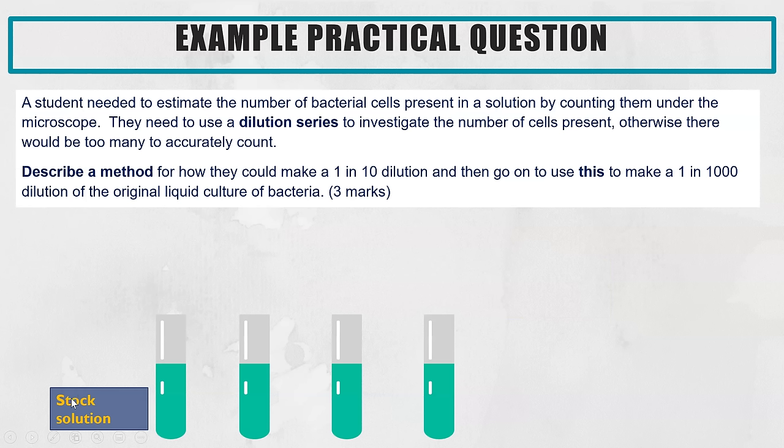So I've got an example practical question here. A student needed to estimate the number of bacterial cells present in a solution by counting them under the microscope. They needed to use a dilution series to investigate the number of cells present otherwise there'd be too many bacteria to accurately count. So the actual question is describe a method for how they could make a 1 in 10 dilution and then use that solution to make a 1 in 1000 dilution of the original liquid culture of bacteria.